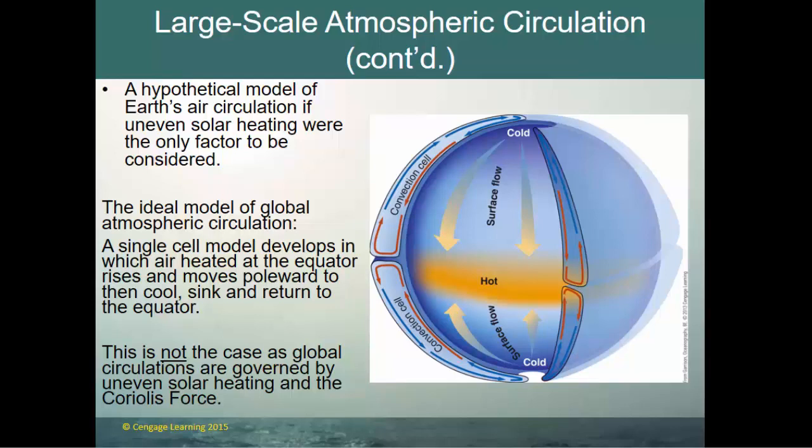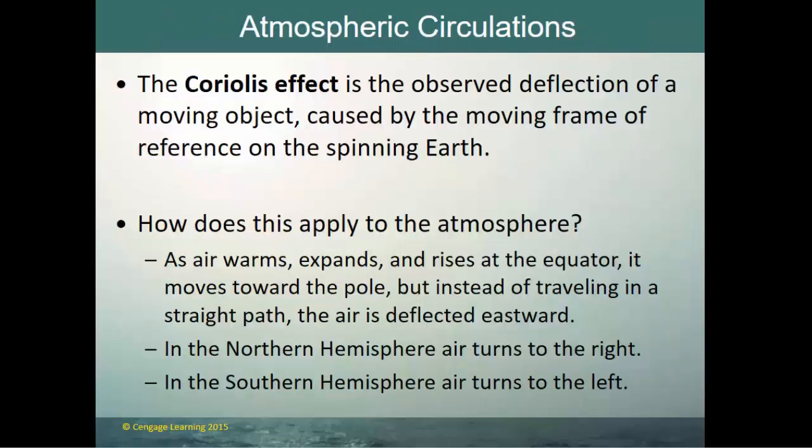In a single-cell model, air heated at the equator rises, moves poleward, cools, sinks, and returns to the equator. However, this is not the case because global circulations are actually governed by both uneven solar heating and the Coriolis effect, with uneven heating changing due to the tilt of Earth's axis.